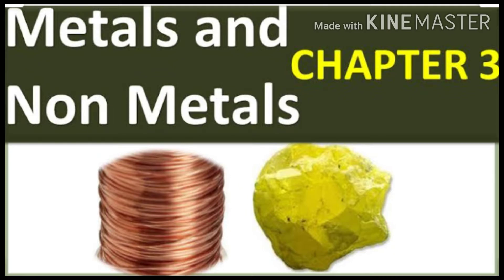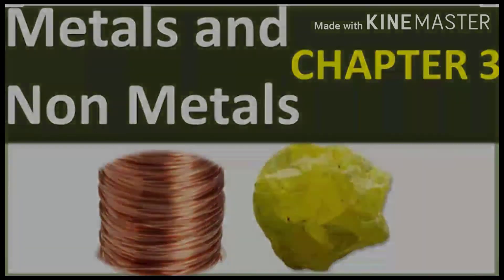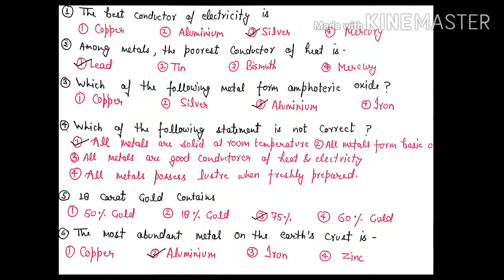Question 1: The best conductor of electricity is - copper, aluminum, silver, and mercury. So the right option is 3, silver.